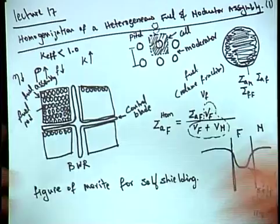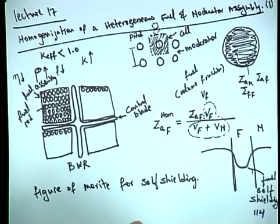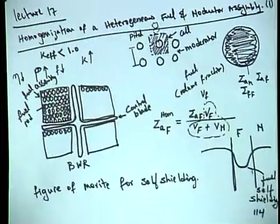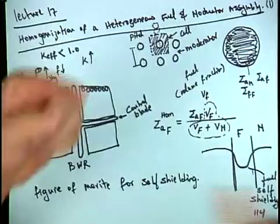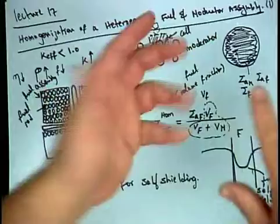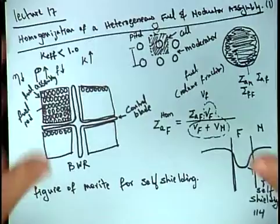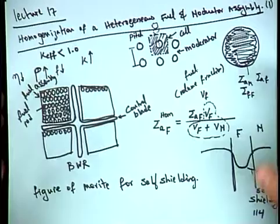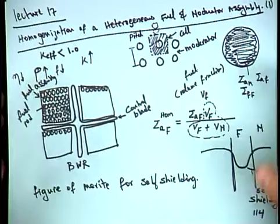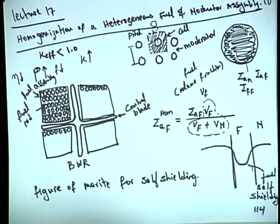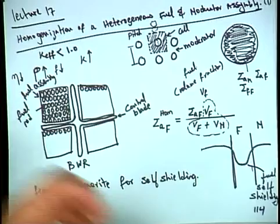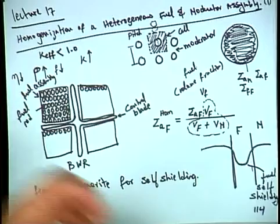Because the reactor core is heterogeneous, in order to solve the diffusion equation we must homogenize the core. To do this, you pick a unit cell. The unit cells differ depending on location: in the fuel assembly interior, the unit cell consists of part fuel and part moderator; near the periphery, you also include cladding, structural material, and perhaps part of a control rod.